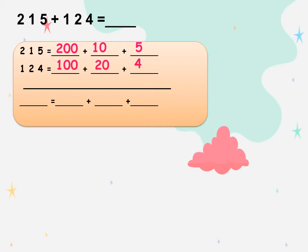Now we want to get the result for these values. 200 plus 100 equals 300. 10 plus 20 equals 30. And 5 plus 4 equals 9. So the result is 339.